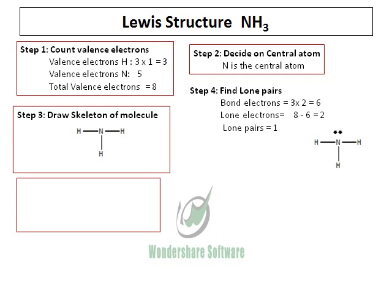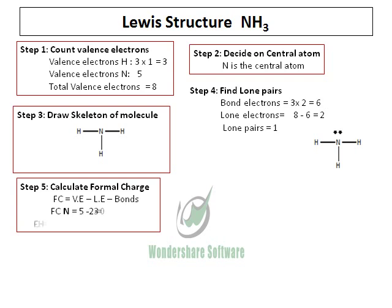After we find the lone pairs, we need to calculate the formal charge. Formal charge is calculated based on the valence electrons, the lone electrons, and the number of bonds. The formal charge on nitrogen is 0, and the formal charge on hydrogen is also equal to 0.